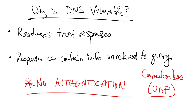Unlike BGP, where routing messages are transmitted over a reliable TCP connection, UDP queries are sent over a connectionless UDP connection. Therefore, a resolver does not have a way of mapping the response that it receives for a query, other than the query ID, which can be forged by the attacker.